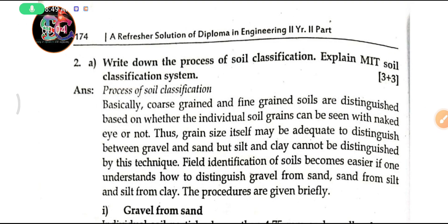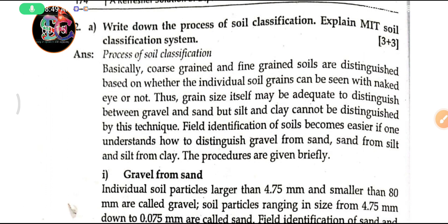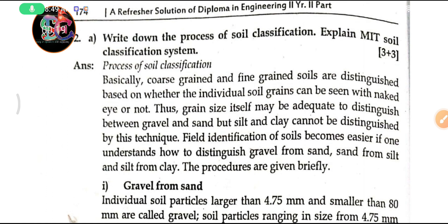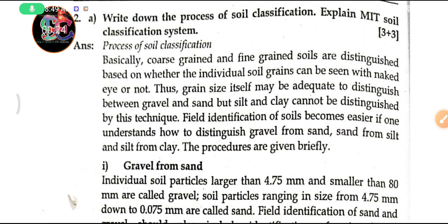Hello friends, today we are going to discuss the process of soil classification and explain the MIT soil classification system. Basically, coarse grain and fine grain soils are distinguished based on whether the individual soil grain can be seen with the naked eye or not.